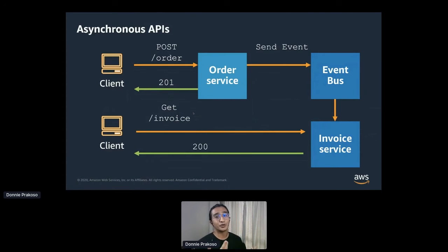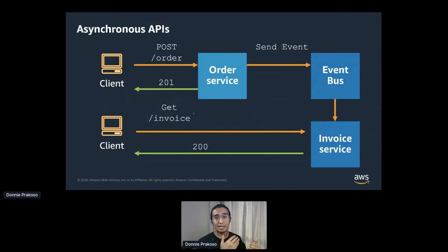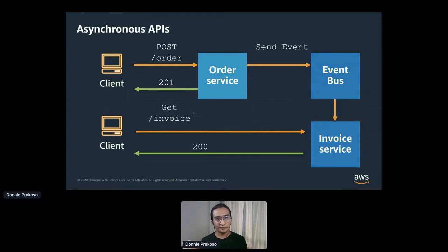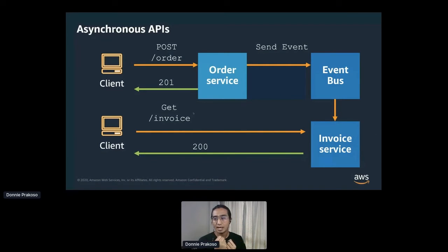As a solution, we could implement asynchronous communication by leveraging a message or event bus to choreograph communication between services. In this example of a request-reply pattern, a client sends a request to the order service, which immediately returns a response to the client that the request has been created, along with an ID and URL to retrieve the result. In the background, since the request might take longer to finish, the order service doesn't directly call the invoice service — instead it sends a message to the event bus, which routes it to the invoice service. Meanwhile, the client will poll for results, and once the invoice service is done processing, it provides results back to the client.